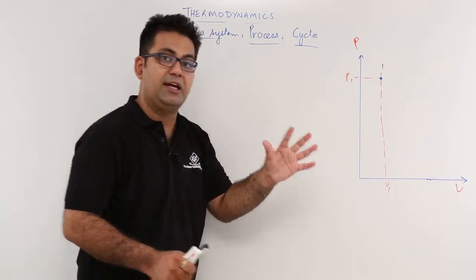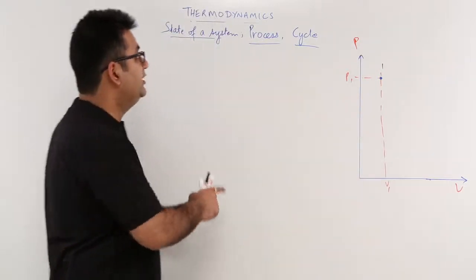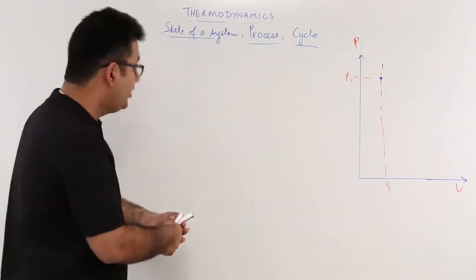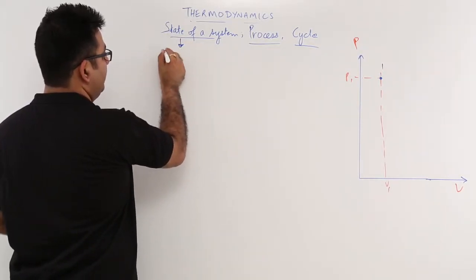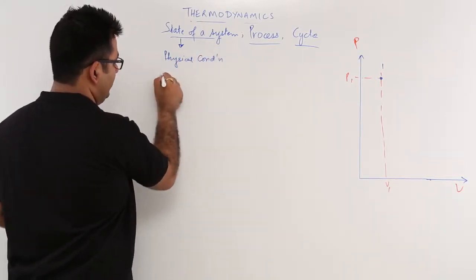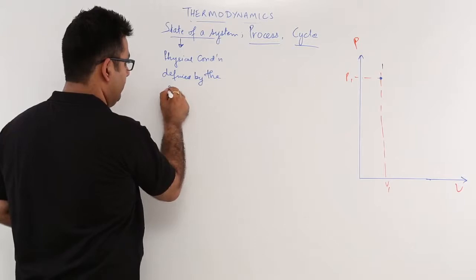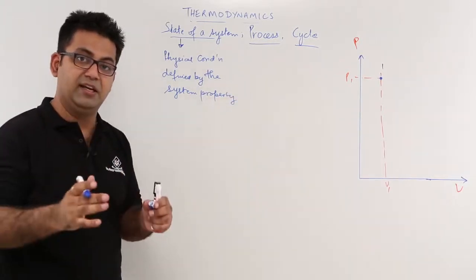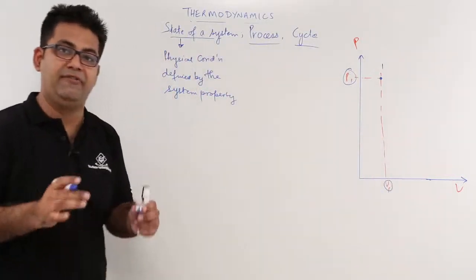When the condition of a system is defined by its properties, that condition is called the state of the system. So here, 1 is the state of the system. To define a state, you have to have the system properties defined — the physical condition which is defined by the system properties.